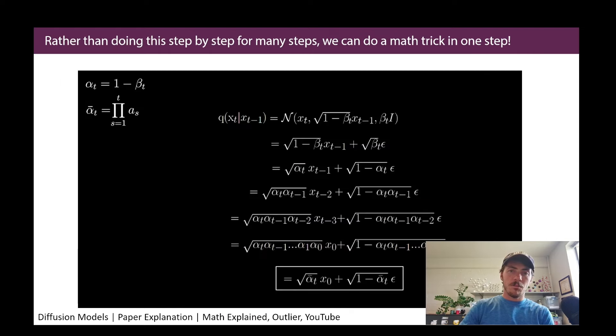So you might be thinking, why do I care about that? What's the benefit here? The benefit is that this allows us to avoid doing it step by step for many steps because mathematically, we can do a trick. This conditional probability is simply equal to this right there. We can skip all of the steps, which is going to be to our advantage here.